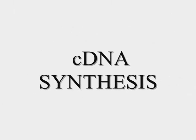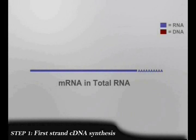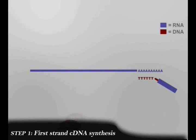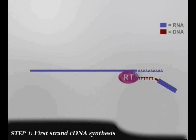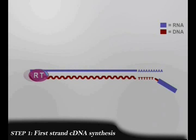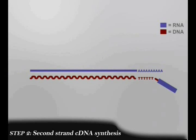After RNA isolation, the next step is cDNA synthesis. Here the mRNA is taken and cDNA primers are added to it. The reverse transcriptase enzyme helps to synthesize the first cDNA strand. Next, the second cDNA strand synthesis takes place.